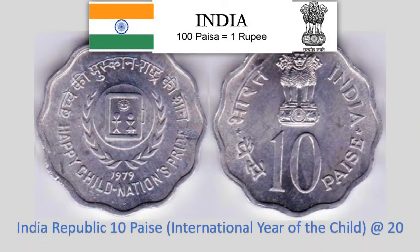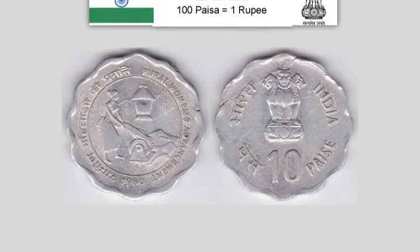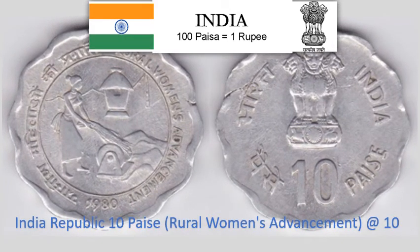India Republic 10 Paise 1979 — Circulating Commemorative Coin, International Year of the Child. 2.3 gram Aluminium scalloped coin with 12 notches, 26 mm diameter. Krause Reference No. 33. Approximate market value Rs. 20.